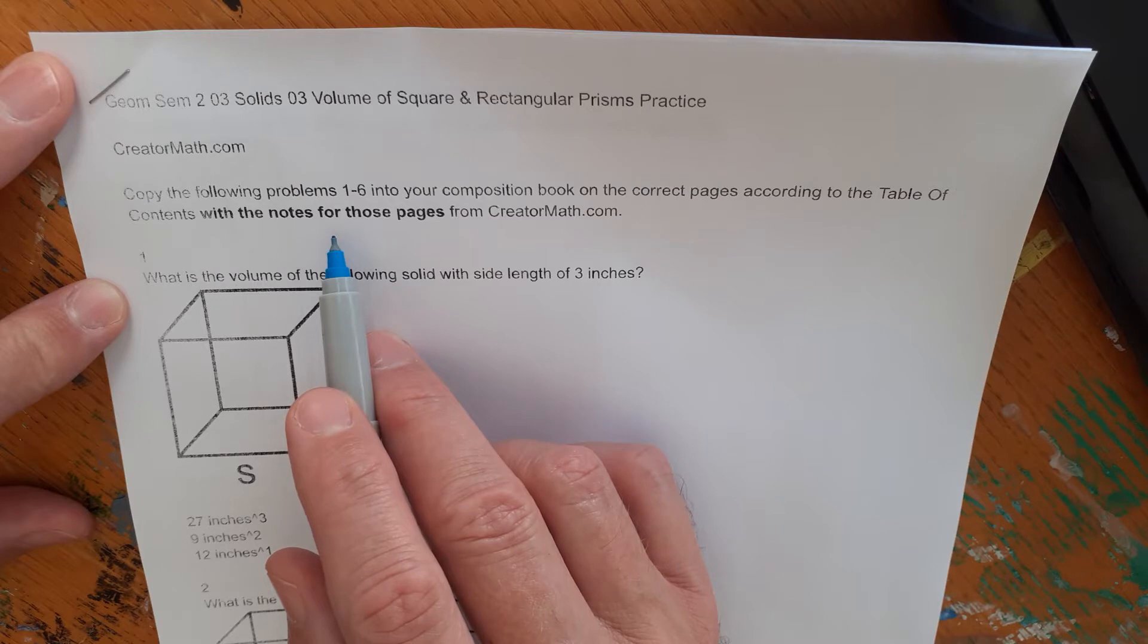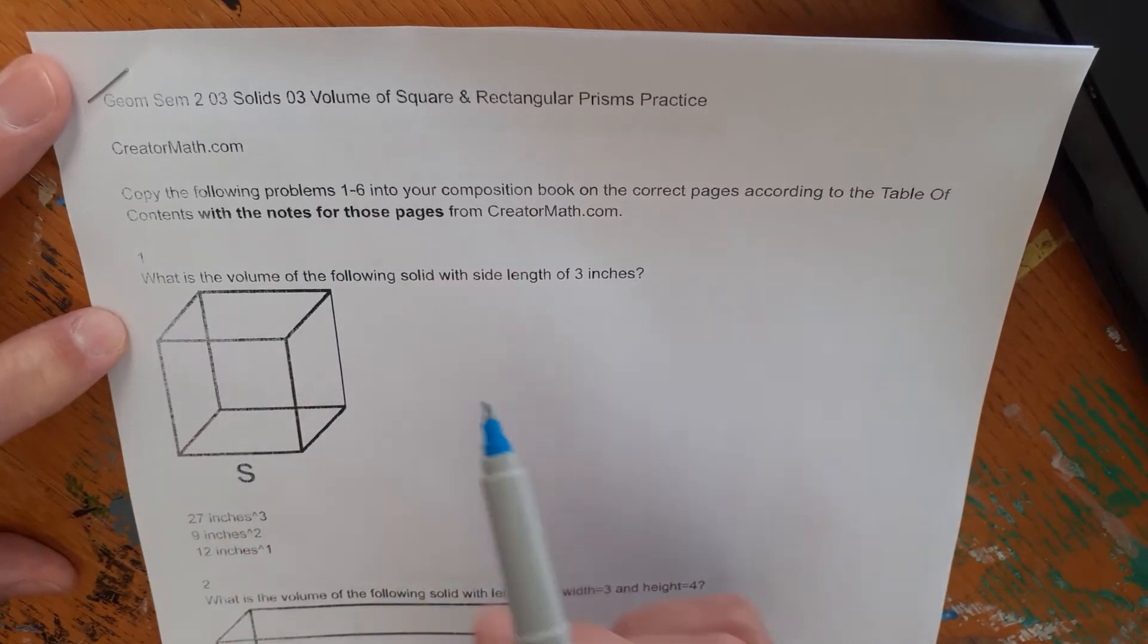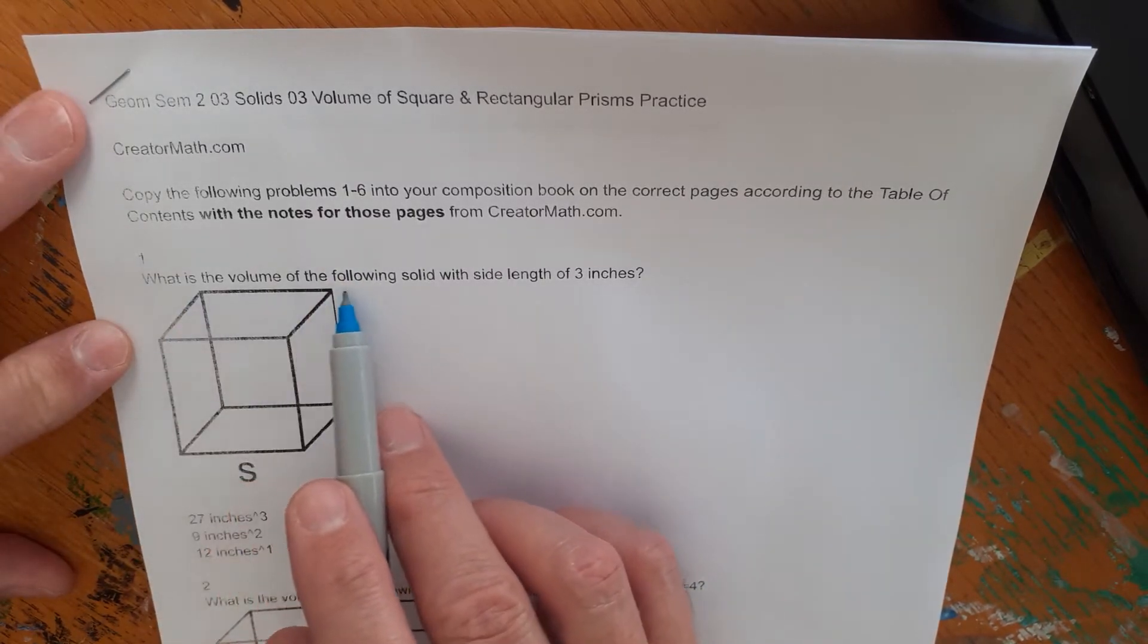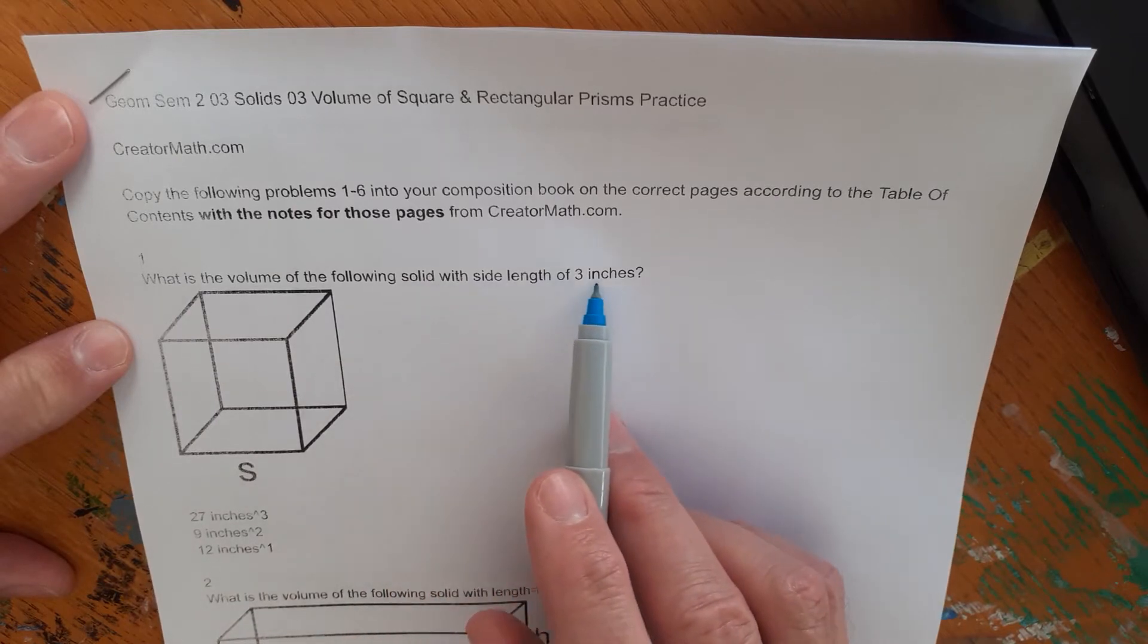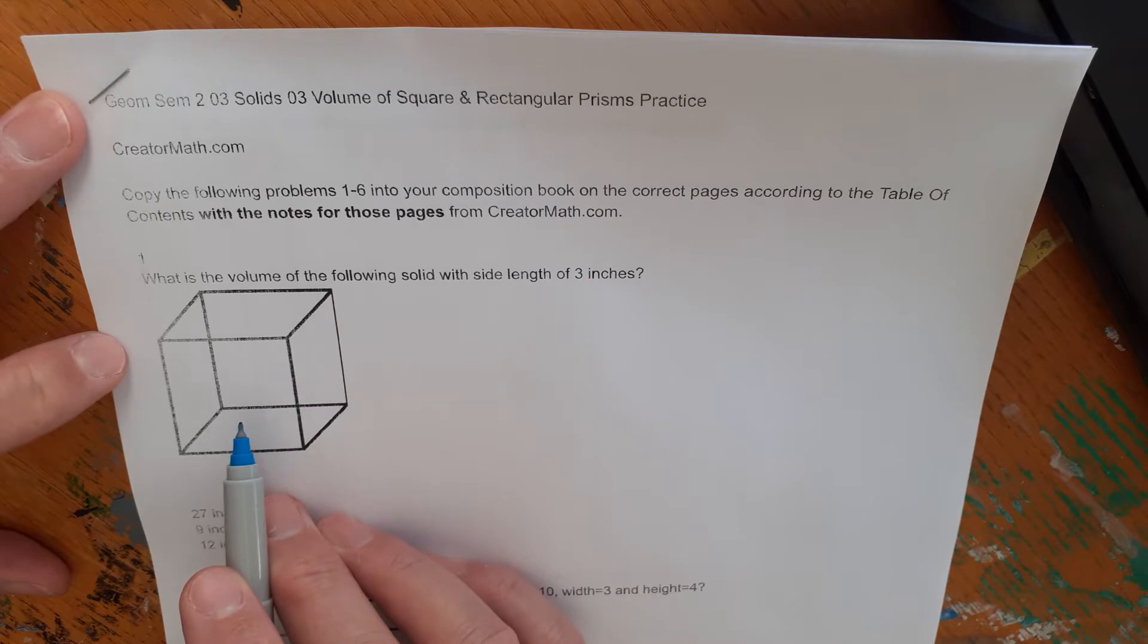That's in a separate tab there. It's actually a word that says notes. You click on it and the notes open up and make sure they're on the right pages in the comp book. So these are pretty straightforward. Let's go through a few of these. What is the volume of the following solid with side length of three inches? The shape is a cube. It's a three-dimensional shape.